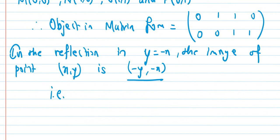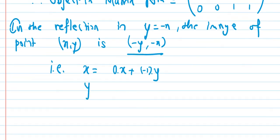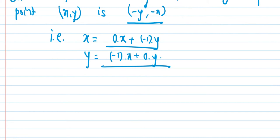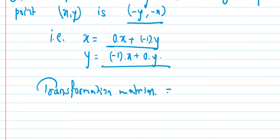To find the transformation matrix, we write: minus y equals 0 times x plus minus 1 times y, and minus x equals minus 1 times x plus 0 times y. So the transformation matrix for reflection in y equals to minus x is 0, minus 1 in the first row and minus 1, 0 in the second row.